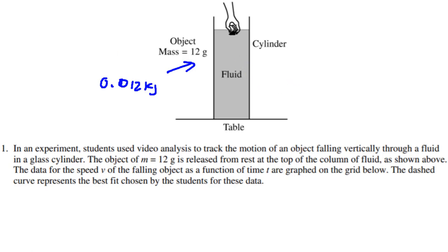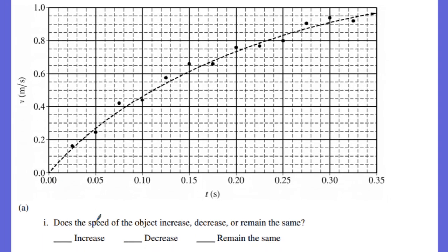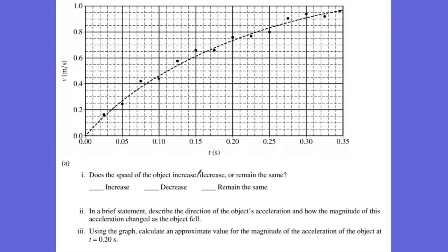They give us a graph of data here, and remember, this is a velocity-time graph — it's graphing the velocity of the object. The first thing it says is: does the speed of the object increase, decrease, or remain the same? The speed starts at zero, then goes up and gets faster and faster and faster, so the speed is increasing. That is worth one point.